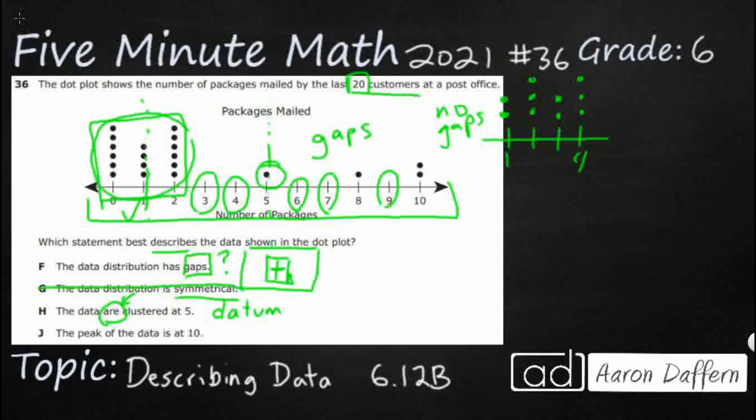They are clustered right down here between 0 and 2, because that's where most of them are. You've got 1, 2, 3, 4 outside of this group. So 16 are grouped in this little 0, 1, and 2 span, and the other 4 are down at the other end. So no, we cannot say the data are clustered at 5. They are clustered up there at 0 to 2. And then finally, let's look at the peak of the data.